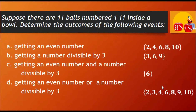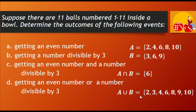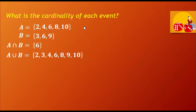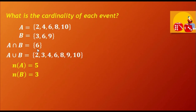In the study of sets, the word AND means intersection while the word OR means union. So if we name the event of getting an even number as event A and the event of getting a number divisible by 3 as event B, then we can name the third event as A intersection B and the fourth event as A union B. Event A has 5 outcomes, so the cardinality of A is 5. Event B has 3 outcomes, so the cardinality of B is 3. The cardinality of A intersection B is 1 while the cardinality of A union B is 7.